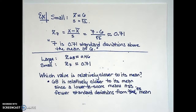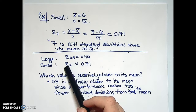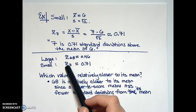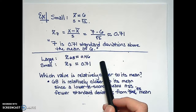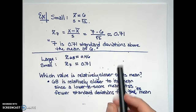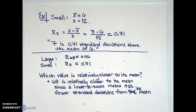If two people are taking two different exams and we calculate their respective z-scores, who performed better? The one who is more standard deviations above the mean. So you'd want to look for a higher positive z-score in order to find who performed relatively better on their respective exam.